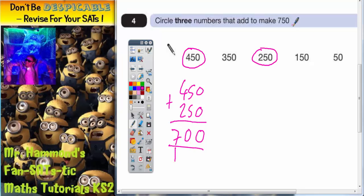Now, we need 750, so we would just need an extra 50, which is there. So that is one possible answer. Okay.